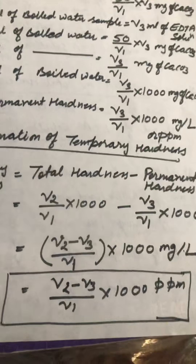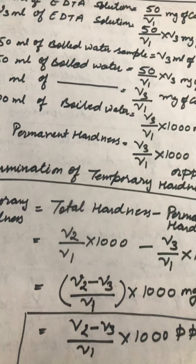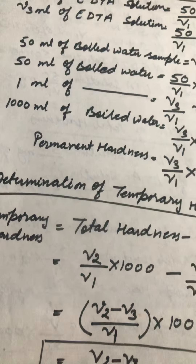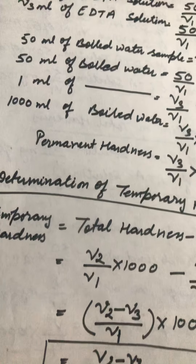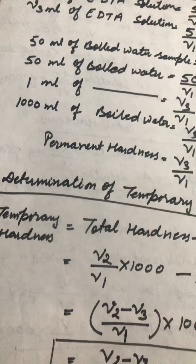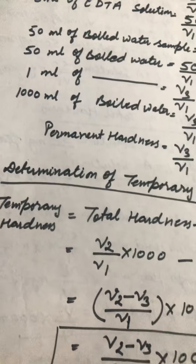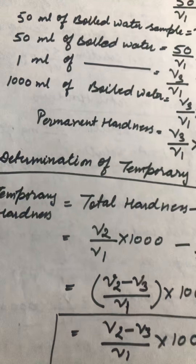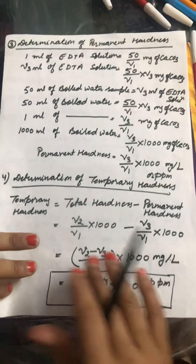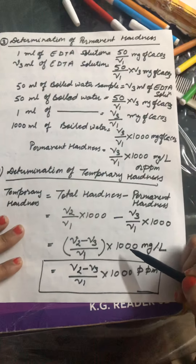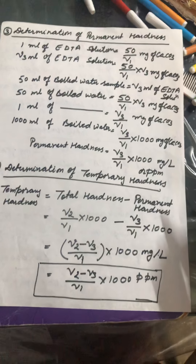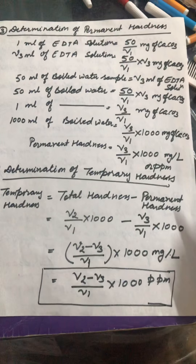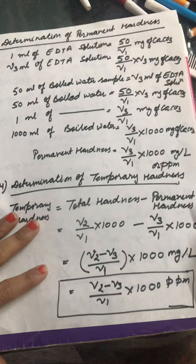This marks the end of the EDTA method. Further, we will go through the calculation part by solving numericals related to EDTA titration. After using these formulas, you can easily determine the hardness of a particular water sample using the EDTA method. Thank you.